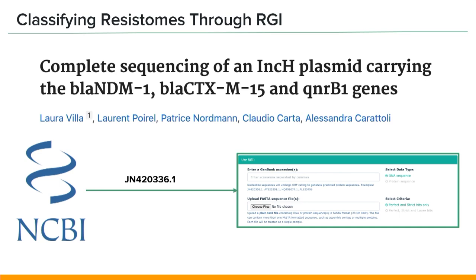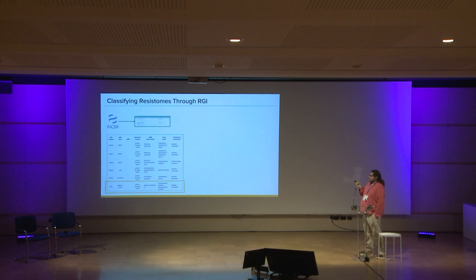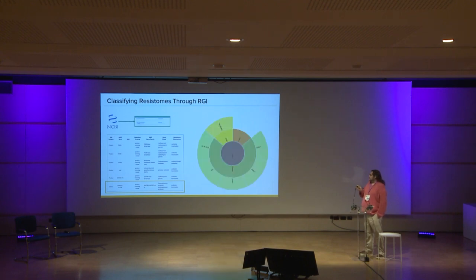I've grabbed the accession from NCBI and put it into our web interface. When you run this through RGI, it prints a tabular list of results indicating what resistance genes were found. I've highlighted one at the bottom because it indicates a strict criteria — this goes back to our idea of a bit score cutoff. When we say perfect, we're talking about something that is 100% identical to a canonical resistance gene. When we say strict, it's something that's not 100% identical but is above the bit score cutoff that we've manually curated.